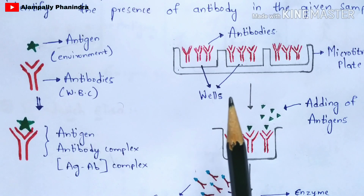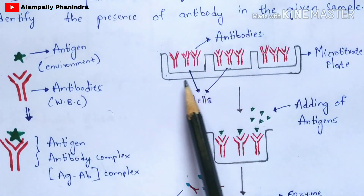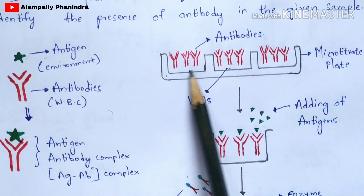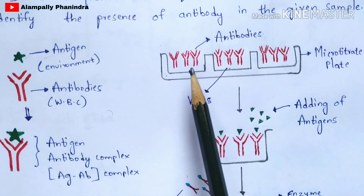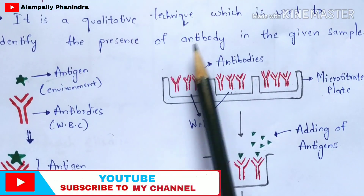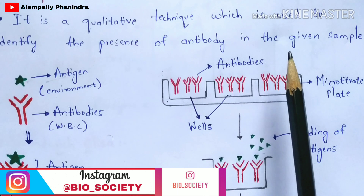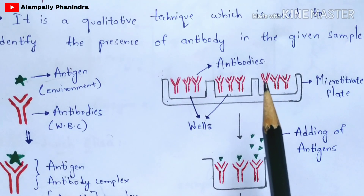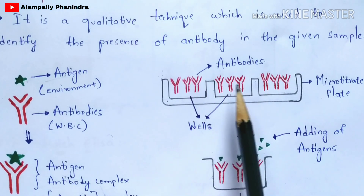Now let us learn about the ELISA test protocol. First, you are going to take a microtiter plate. In this microtiter plate we prepare wells — I have drawn three wells here. In these wells, you are going to add the sample. Since the test is used to identify the presence of antibodies, you add the serum which consists of antibodies.